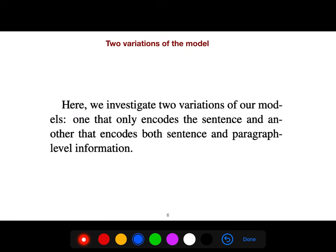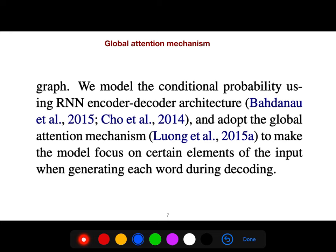And so here we investigate two variations of our models. So we focus on, without loss of generality in this lecture, I just focus on sentence and not sentence and paragraph. So we model the conditional probability using encoder or decoder that I explained. We use a global attention. Global attention is easy. Why? We call it soft attention in the literature. Soft attention.